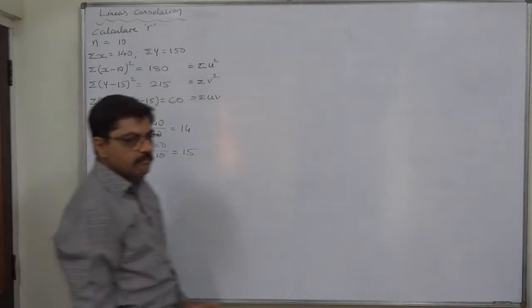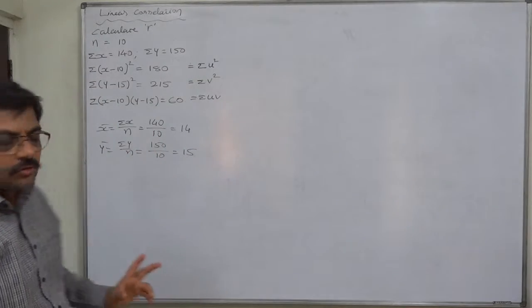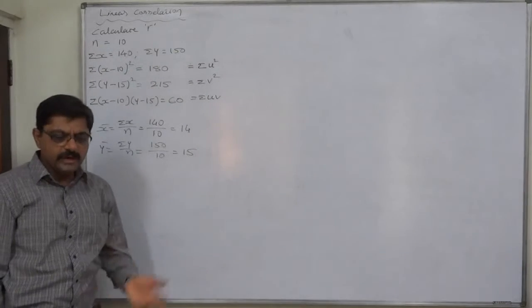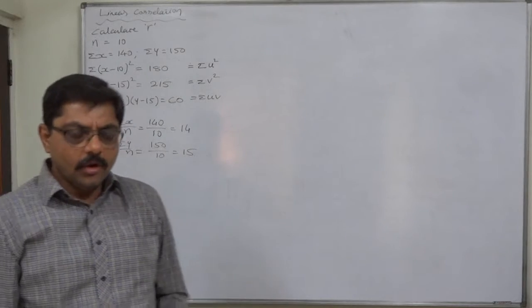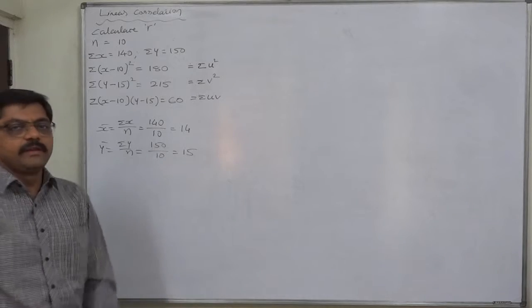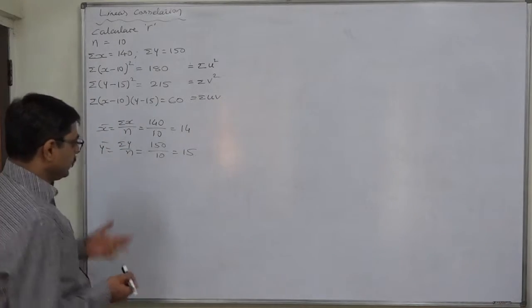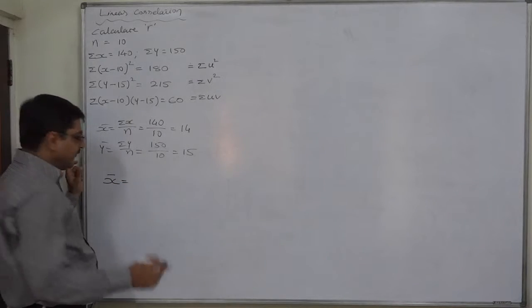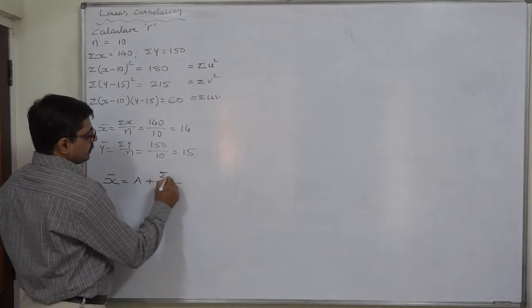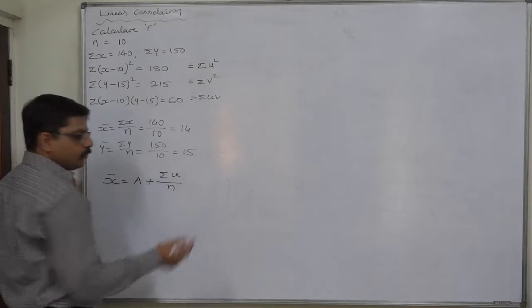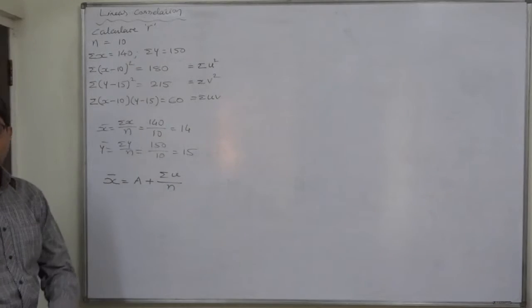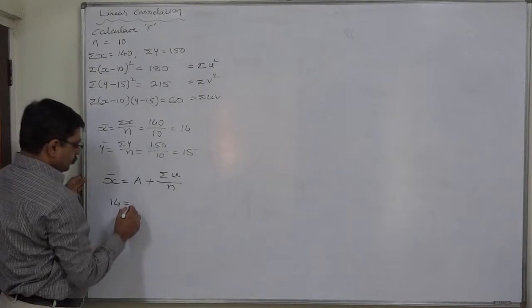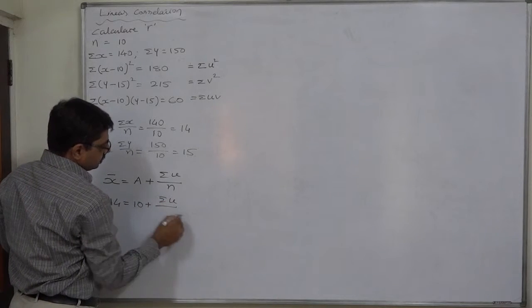With these three summations we must also have σu and σv — we cannot calculate the coefficient of correlation using σx and σy; we have to use all summations of deviations taken from assumed means. So first we have to find σu and σv. The formula to calculate by the indirect way is: x̄ = assumed mean + (σu / n). Here x̄=14 and the assumed mean a=10, so σu is missing.